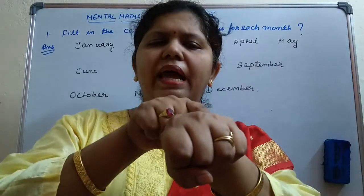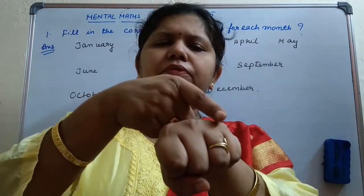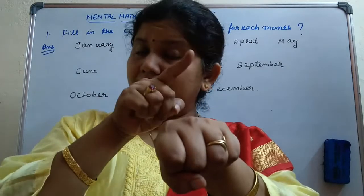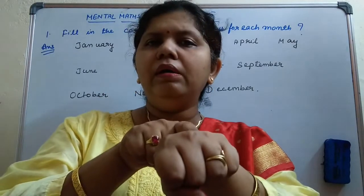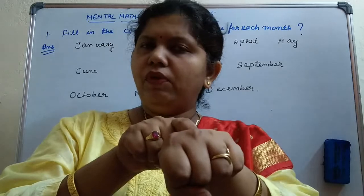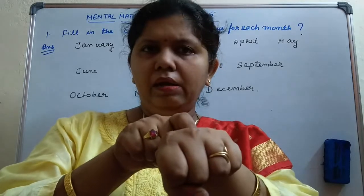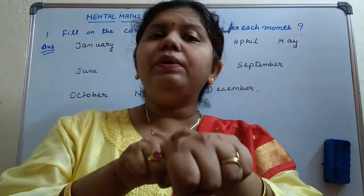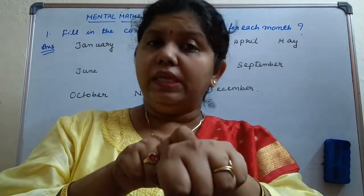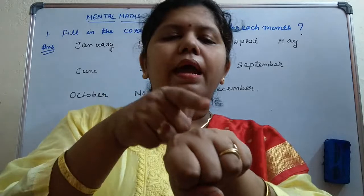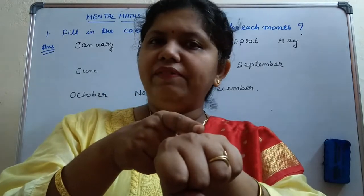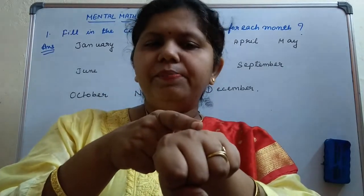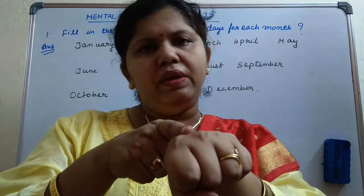February is the shortest month of the year. It will have 28 days for the common year, and for a leap year it will have 29 days. March has 31 days. June is also having 30 days.